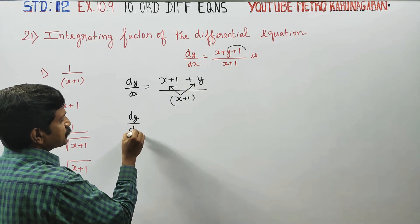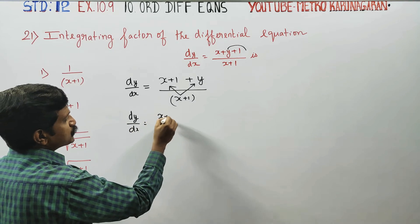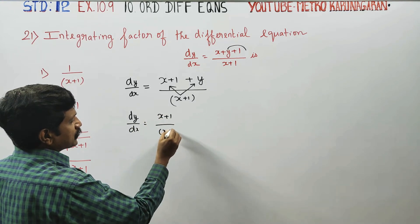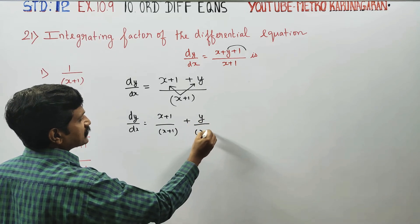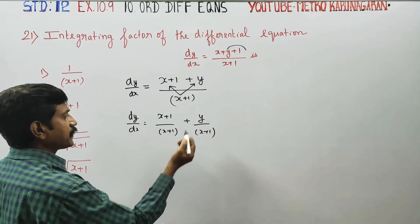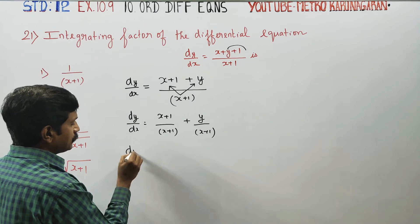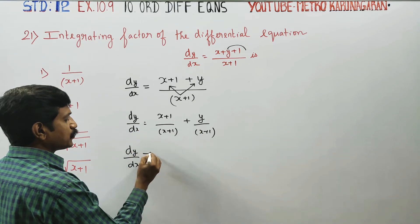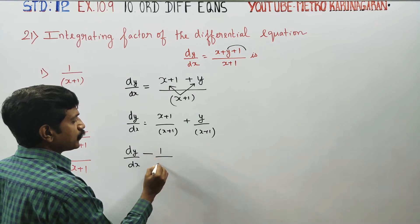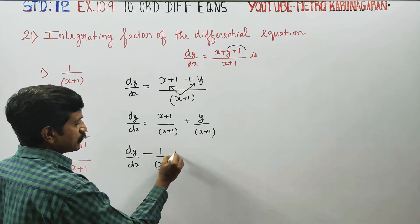dy by dx, x plus 1 by x plus 1, that simplifies to 1. Then y by x plus 1. So dy by dx minus 1 by x plus 1 into y.